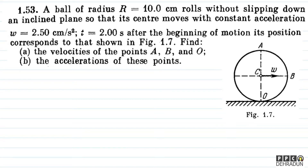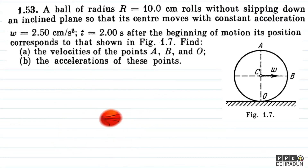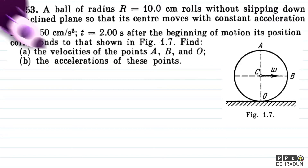The question says: a ball of radius R equal to 10 centimeter rolls without slipping down an inclined plane, so that its center moves with constant acceleration W equal to 2.5 centimeter per second square. T equal to 2 seconds after the beginning of motion, its position corresponds to that shown in figure 1.7. There are two parts: first, the velocities of points A, B and O, and second, the accelerations of these points.